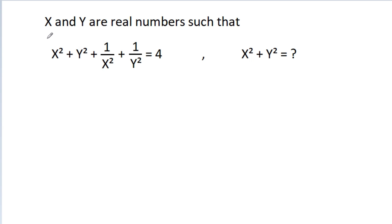In this video, we have given that x squared and y are real numbers such that x squared minus y squared minus 1 by x squared minus 1 by y squared is equal to 4. Then we have to find the value of x squared plus y squared.